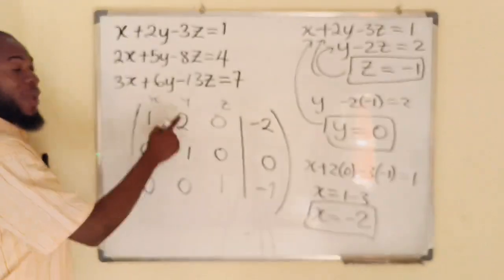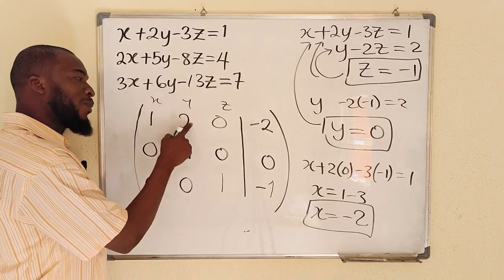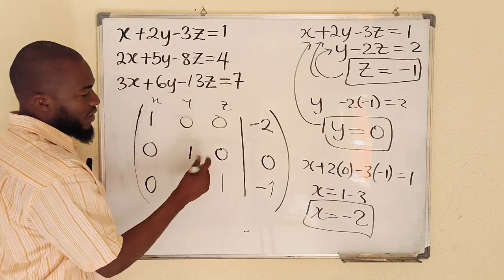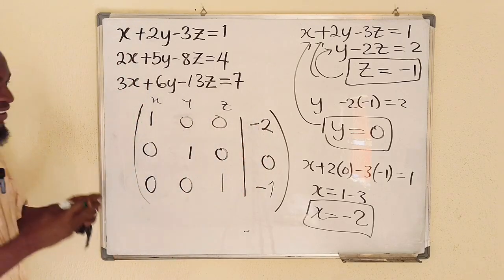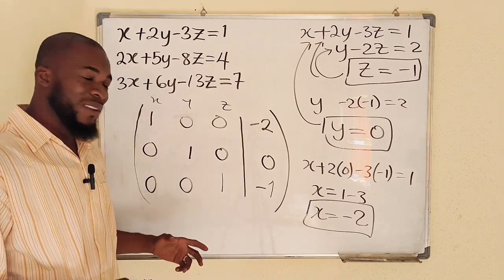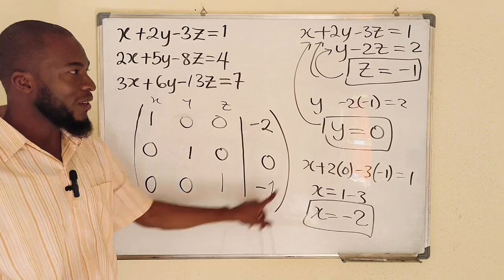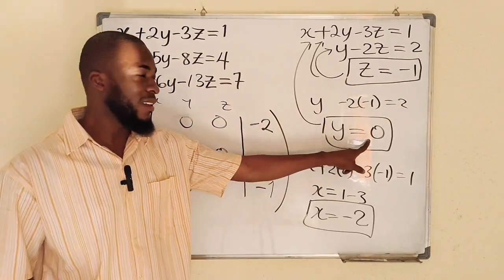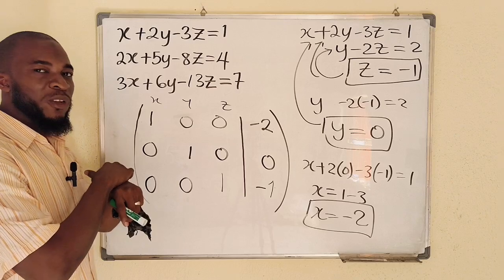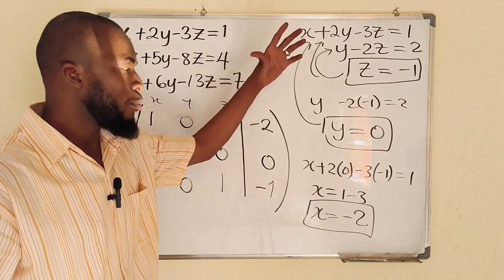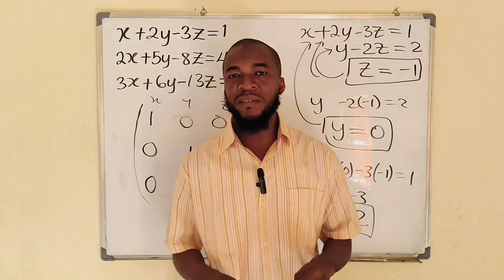After all these operations, the matrix reveals the solutions directly: z = negative 1, y = 0, and x = negative 2. The difference between Gauss-Jordan and Gaussian elimination is that in Gauss-Jordan, you obtain your solution directly from the matrix without performing any back substitution. Thank you for watching — do share with your learning colleagues and don't forget to subscribe to my YouTube channel for more videos.